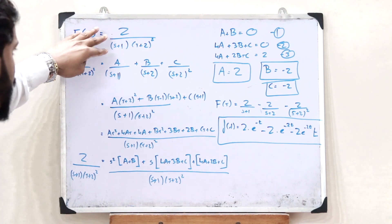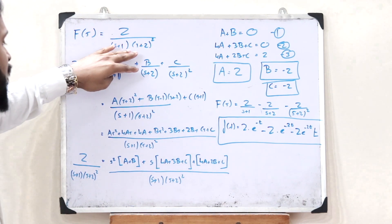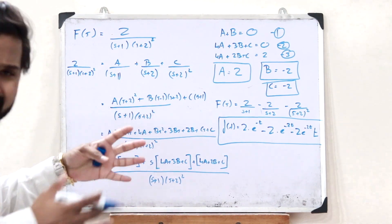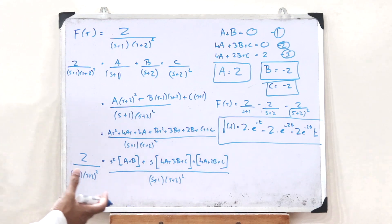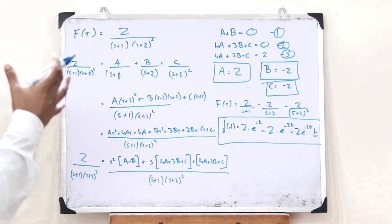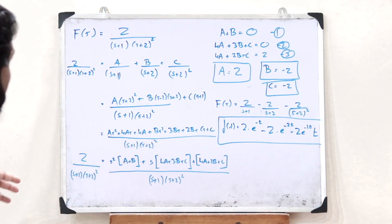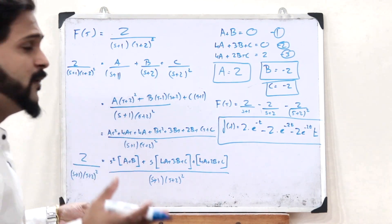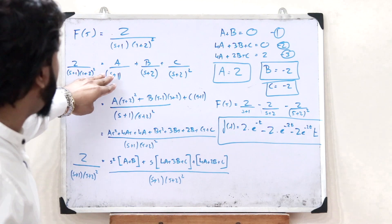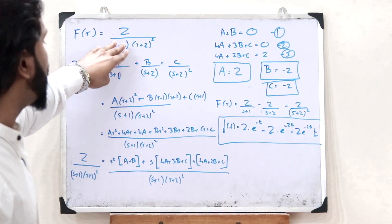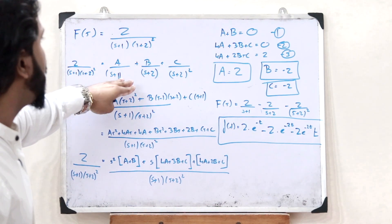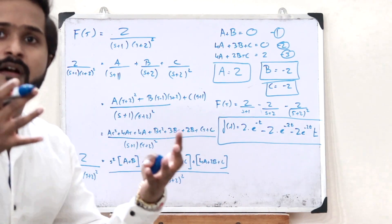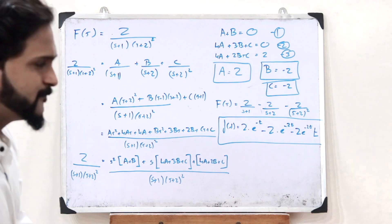Therefore, the inverse Laplace transform f(t) of F(s) = 2/[(s+1)(s+2)²] is: f(t) = 2e^(−t) − 2e^(−2t) − 2t·e^(−2t). All you have to do is follow the properties of splitting these functions using partial fractions.